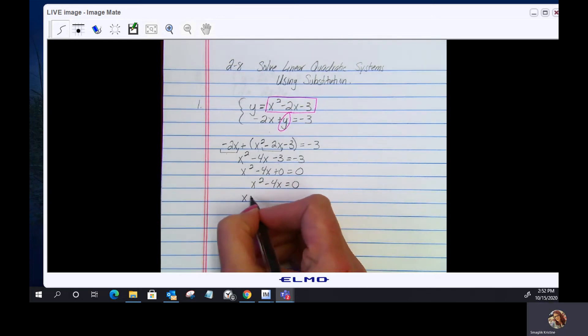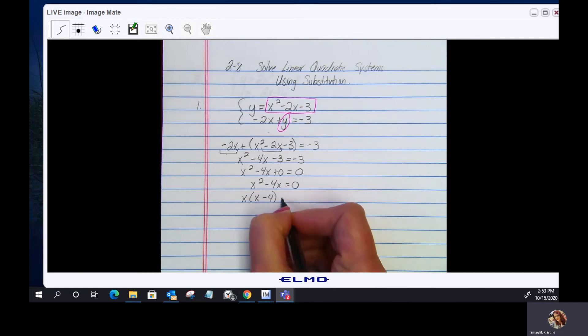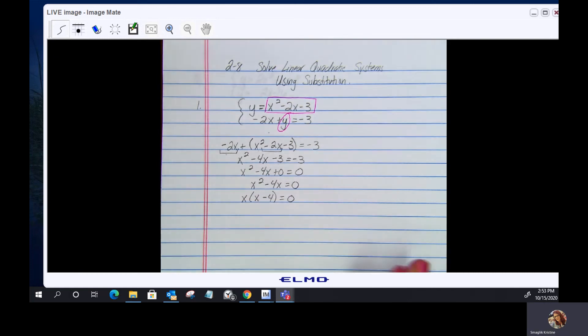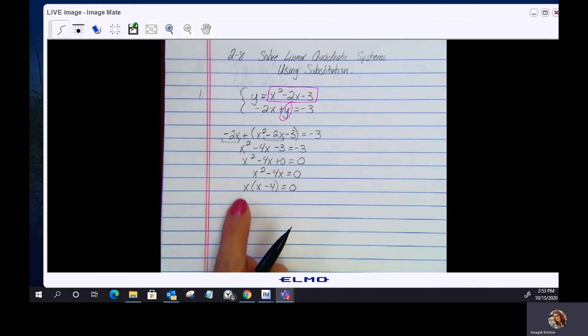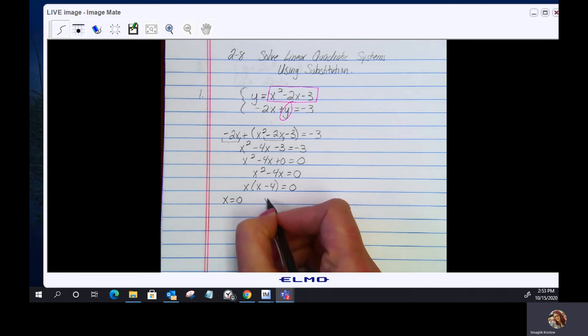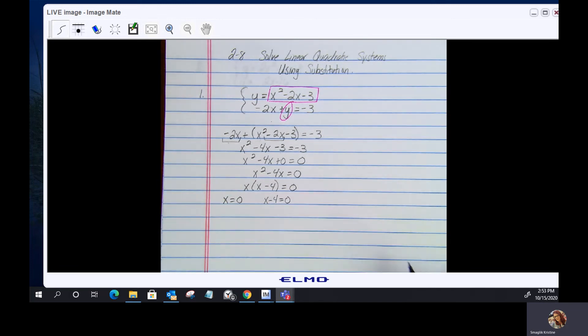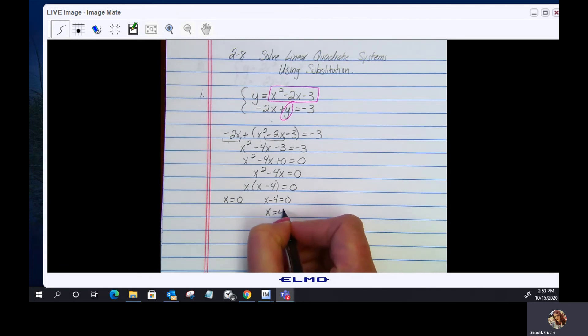I get x times x minus 4 equals 0. And then I'm going to use my 0 product property to solve. So I'll set one factor, which is x equals 0. That one's done. And then x minus 4 equals 0. Well, again, if I add 4 to both sides, I get x equals 4.